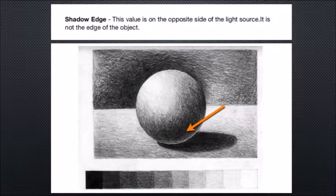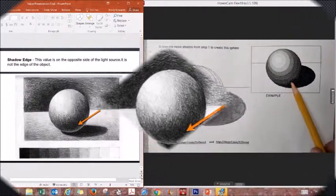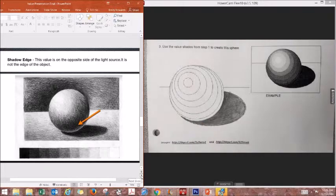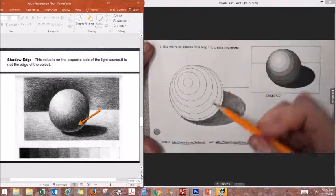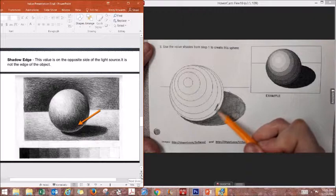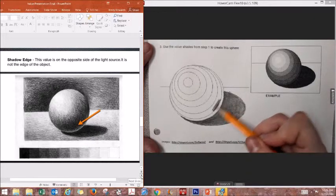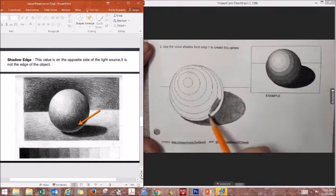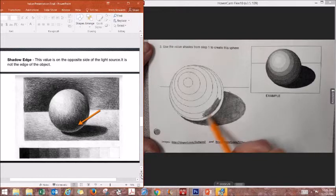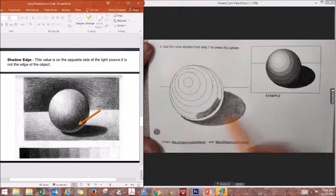We are going to move on to the actual sphere. One of the things that we are going to work on is the shadow edge. What I am going to be putting is this value that is opposite of our light source, which is going to be where my object is the darkest. I am not going to go up to the exact edge of the object; I am actually going to leave a little bit of a gap because I am going to come back to that area a little bit later.